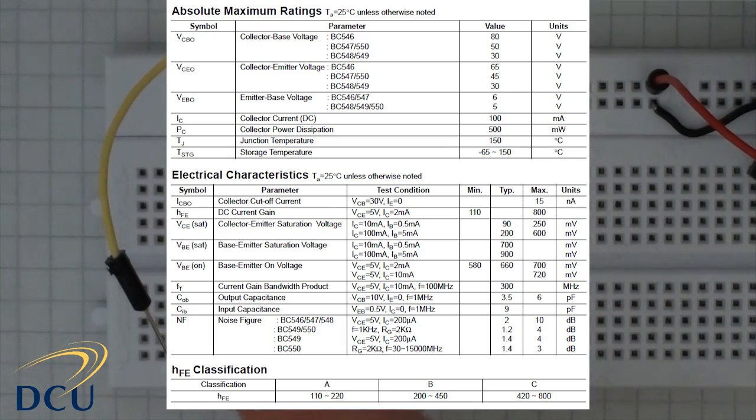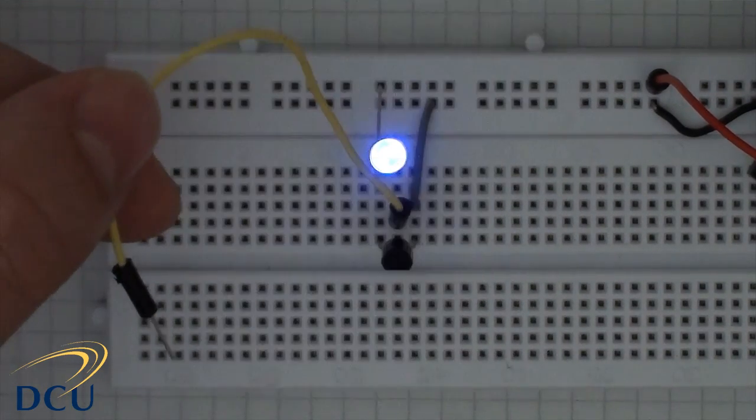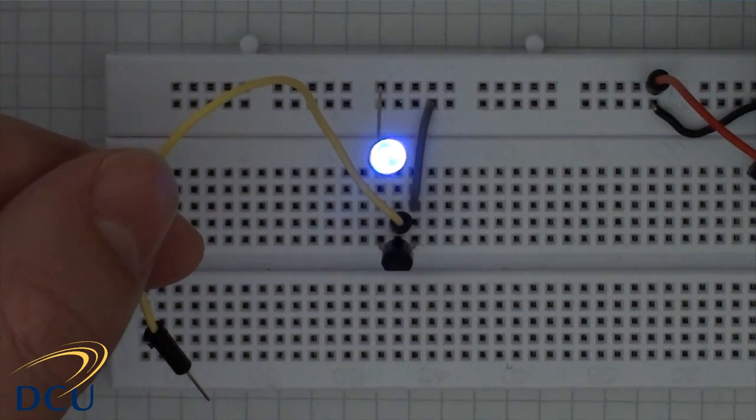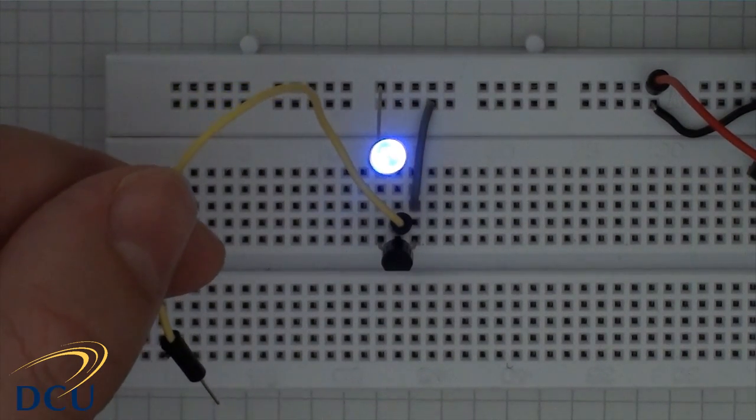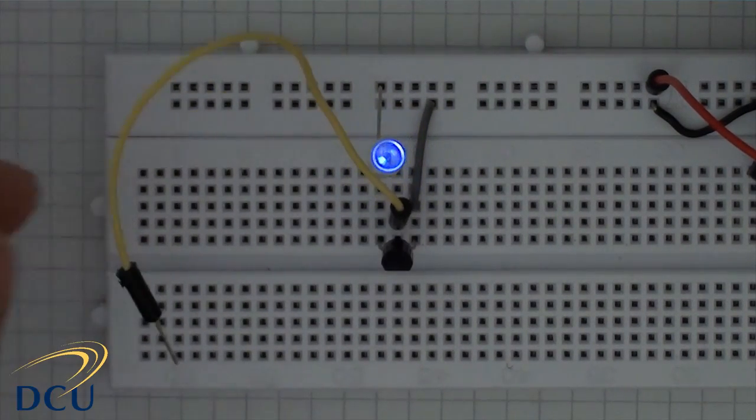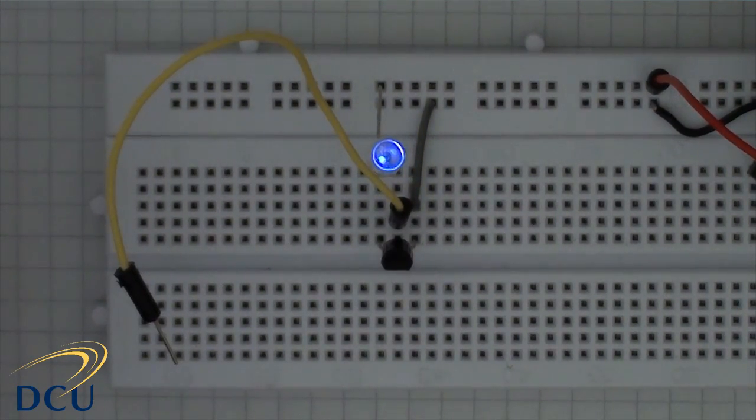If I touch the plastic of the cable, you can see that that's enough current being developed in that line to be able to trigger the transistor and turn it on. So the gain is quite large, so we get a reasonable current flowing through the LED and lighting the LED.